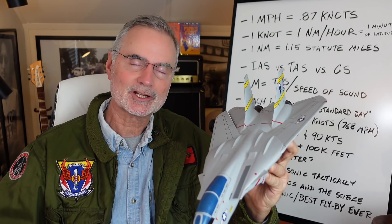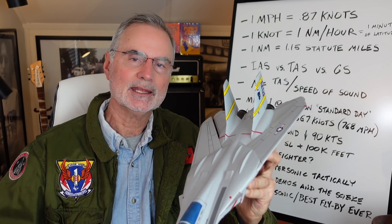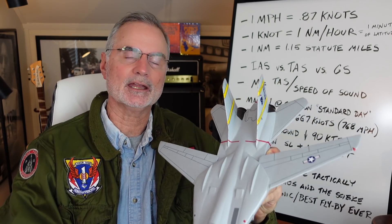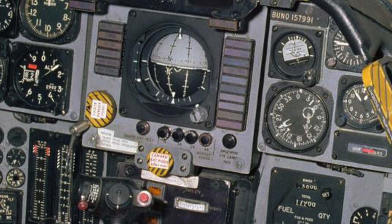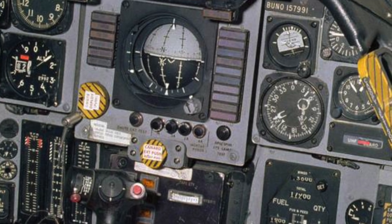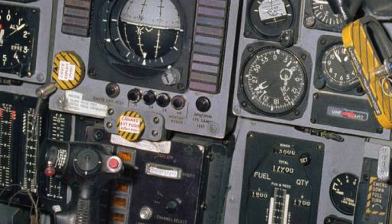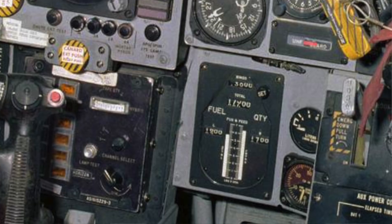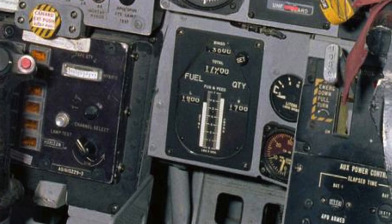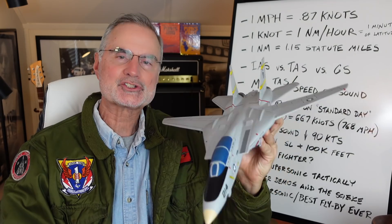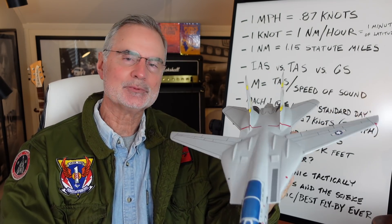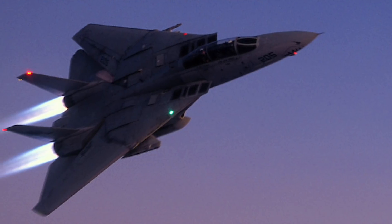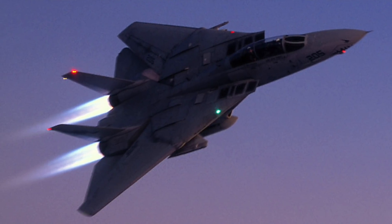Let's talk about how we'd use supersonic flight in a real intercept or engagement. During tactical intercepts we'd fly around at 350–400 knots. Fuel flow at that airspeed at 25,000 feet would be about 4,000–4,500 pounds per hour per engine, so roughly 9,000 pounds per hour total — in a jet that holds 16,200 pounds without tanks and 20,000 with tanks. As soon as you go into afterburner, you're consuming fuel at 4,000 to 5,000 pounds per minute. You will run out of gas fast.